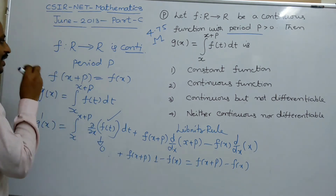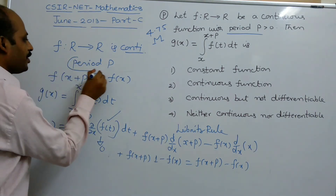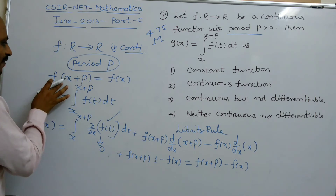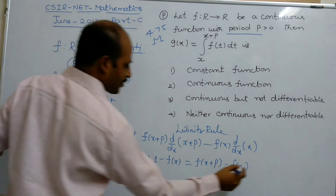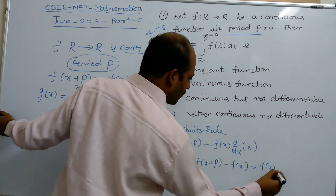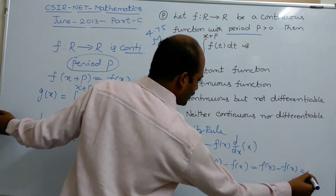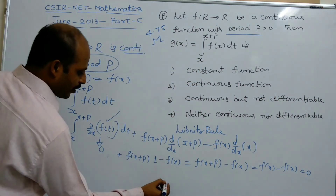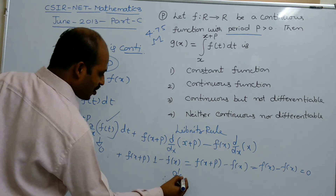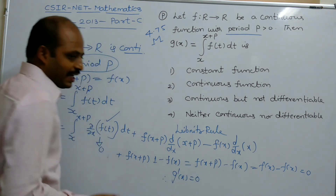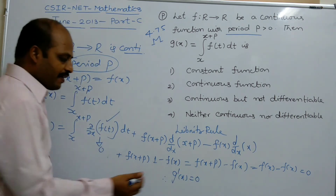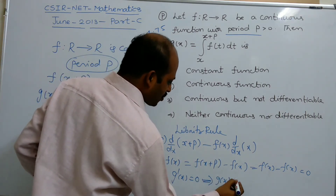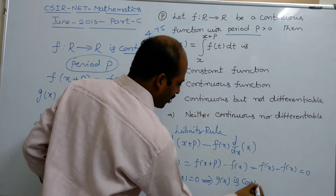Now, using the periodicity condition: since the function has period p, f(x+p) = f(x). Therefore, g'(x) = f(x) - f(x) = 0. Since the derivative of g is 0, g(x) is a constant function.